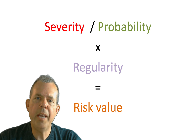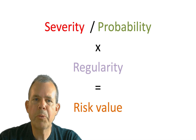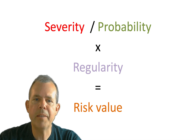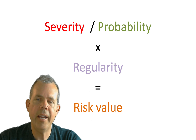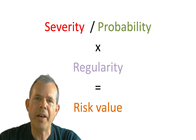When we estimate problems, we take these three factors into account: severity, probability, and regularity. Together, they allow us to assign a risk value to an event.